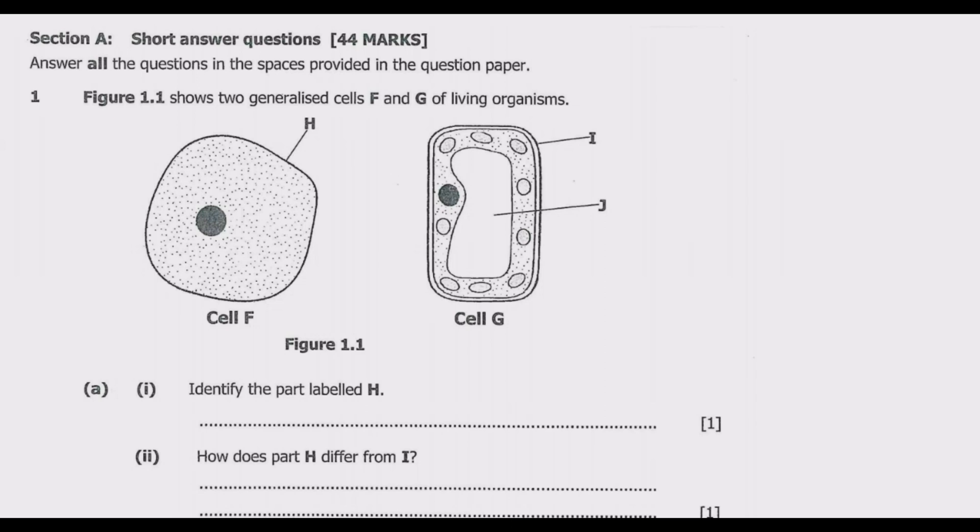Animal cells are generally smaller than plant cells. In terms of the outer space, you notice that animal cells do not have cell walls but they have what is known as cell membranes. Plant cells have cell walls composed of cellulose as well as cell membranes. When you look at the two, the cell wall is found in cell G, so cell G must be a plant cell.